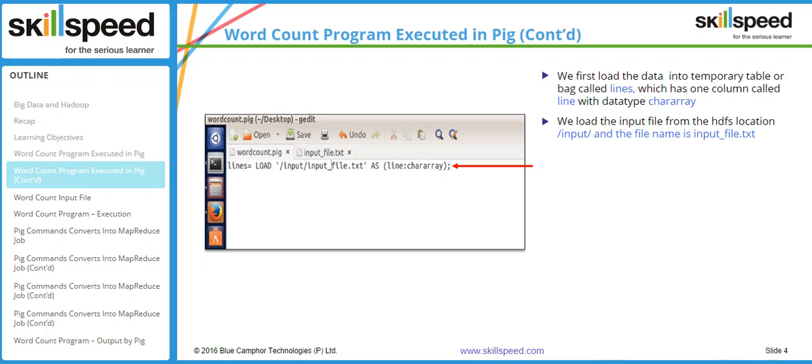In this line I am referring to the file which I want to analyze, and the location of the file is given in HDFS. What this first line does is it will load my input file and it will create a relation of that file to the declaration called 'lines'. So the next time you say 'lines', Pig will refer to this particular file.